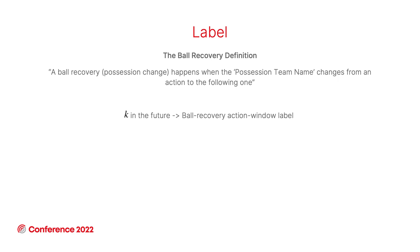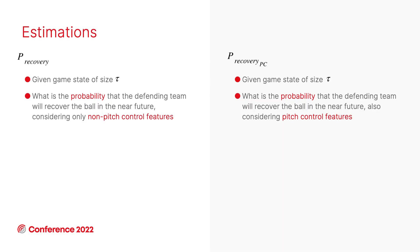First, the label. Our label is whenever the possession team name changes from one action to the following one, and we also want to see that in the near future. So we set K as our action window label. Given a game state, we want to estimate the probability that the defending team will get the ball back — will recover the ball in the near future.